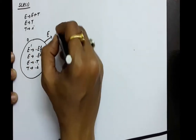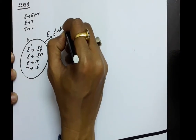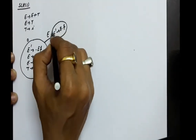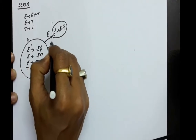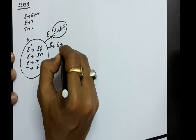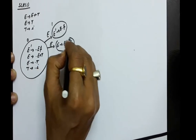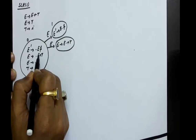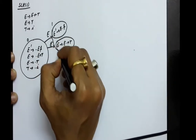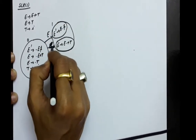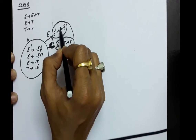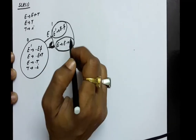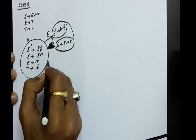Now if we take E from state 0 we will be going to a new state: E' → E.dollar and E → E.+T. Both of these will be in the same state — when we take E, the dot is shifted after E in both items. This is state 1. Now after this we are going to take T.